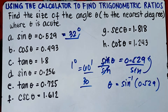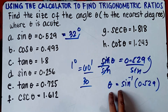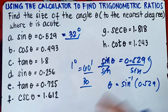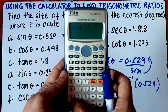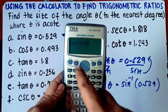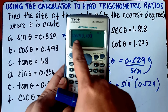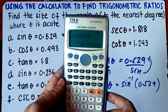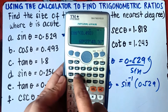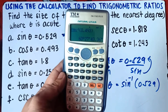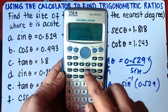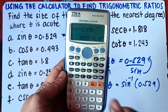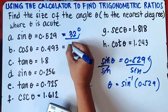Letter B. Since we're told to use the calculator, this will be inverse cosine — shift, then cosine. You know this is inverse cosine if it is raised to the power of negative 1. Enter 0.493, close parenthesis, equal sign. Press the degree symbol: 60 degrees, 27 minutes, 43.36 seconds. Since 27 minutes is less than 30, we round down. Our answer is 60 degrees.